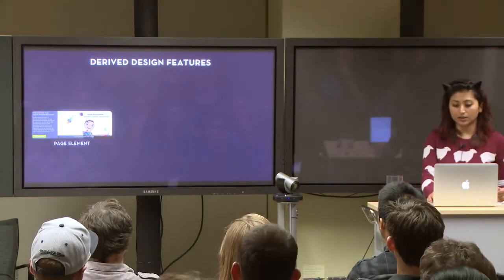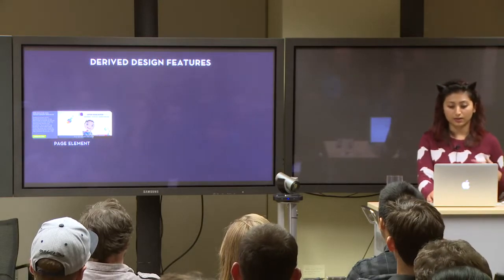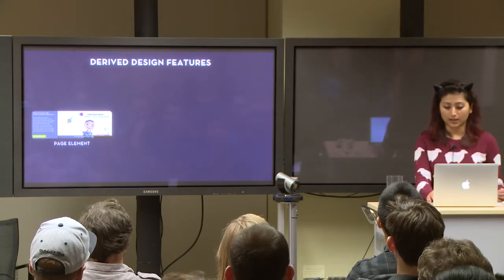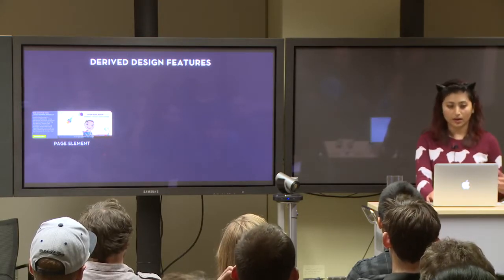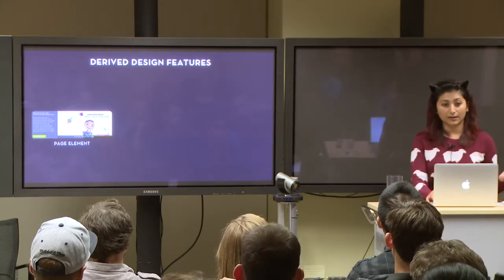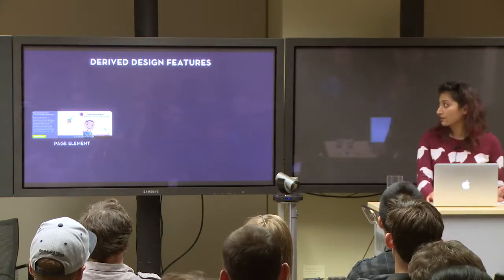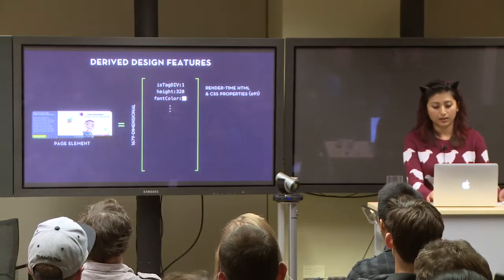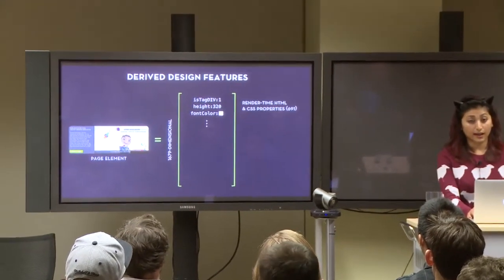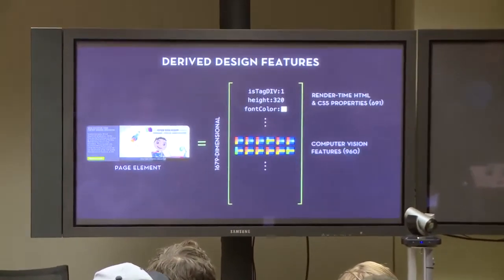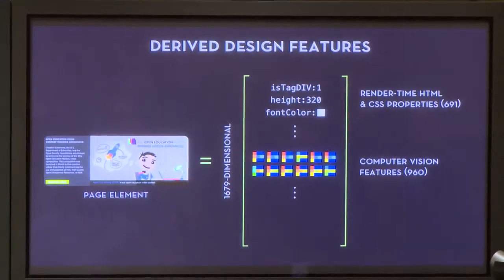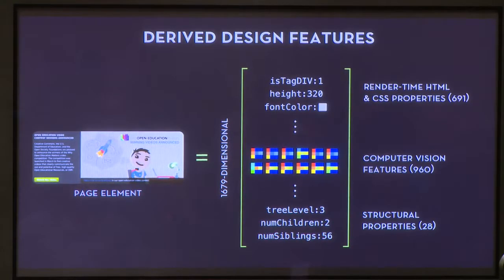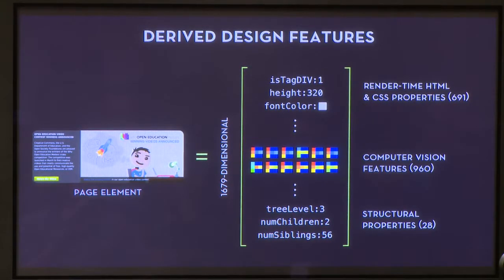On top of this segmentation, Web Zeitgeist computes a set of descriptive features for every page element, which users and applications can then leverage. These features comprise all the design properties that we could think of to measure, including the render-time HTML and CSS properties computed by the layout engine, a collection of computer vision features such as scene descriptors, and a set of high-level structural properties relating to the page segmentation itself.